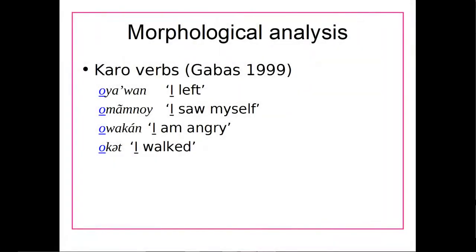As an example of that, we have the language Karo. In Karo, we have the word oiawan, which means 'I left.' We have o-mam-noi, which means 'I saw myself.' We have o-wakan, which means 'I am angry.' And o-ket, which means 'I walked.'